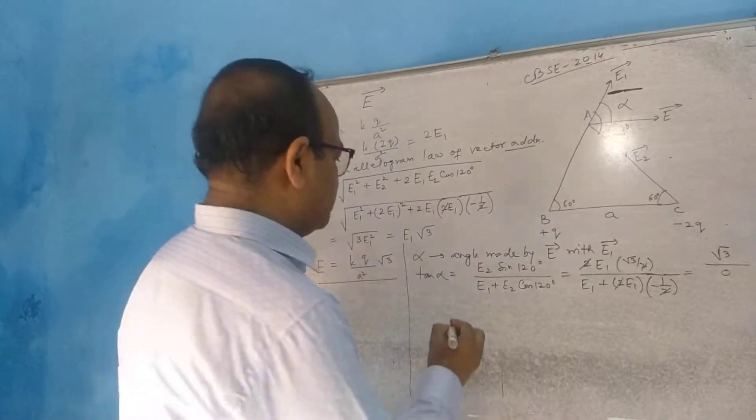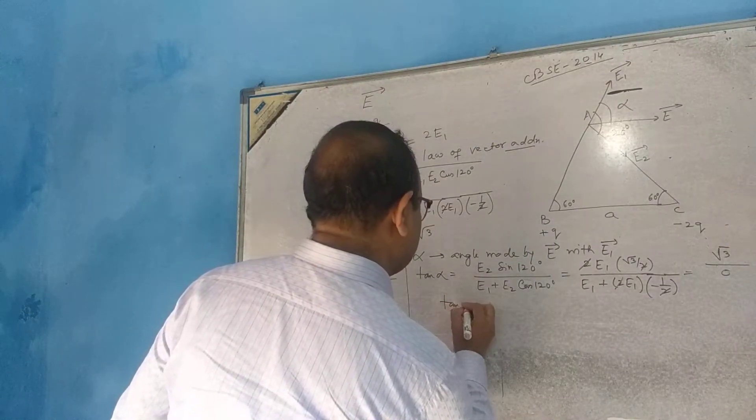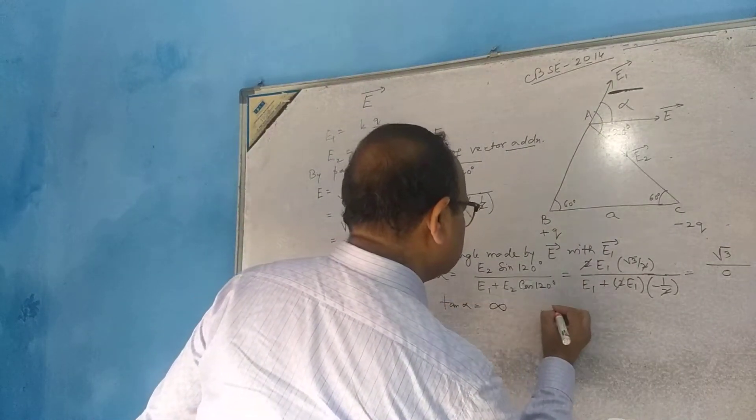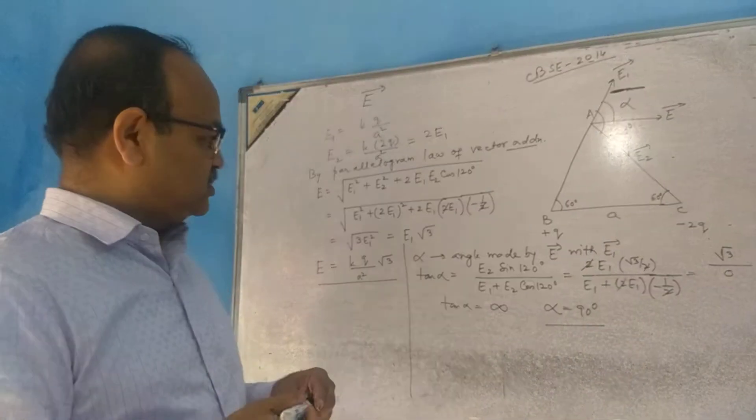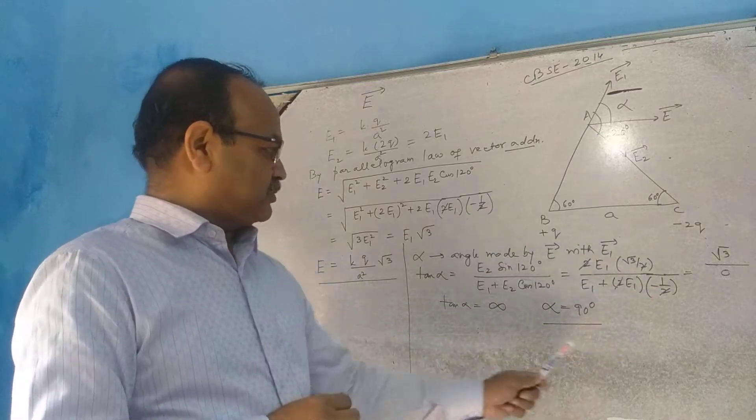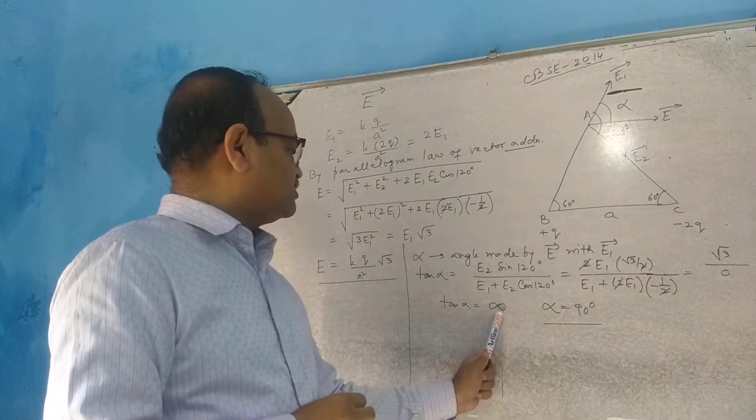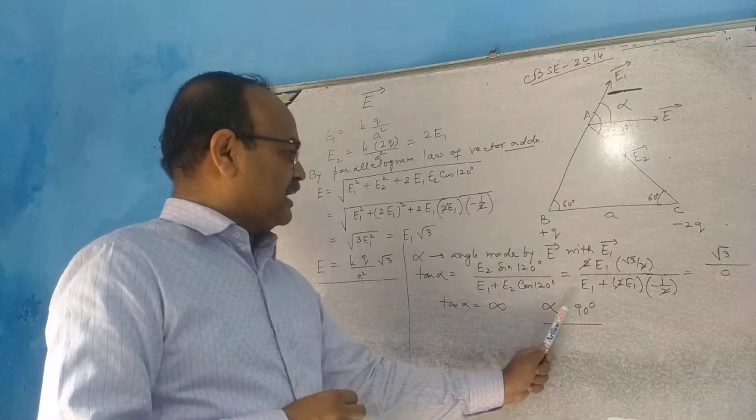Sorry, this question was incomplete. That means tan alpha is equal to infinity, so alpha is equal to 90 degrees. I just complete this question: root C by 0 means tan alpha is equal to infinity, alpha is equal to 90 degrees.